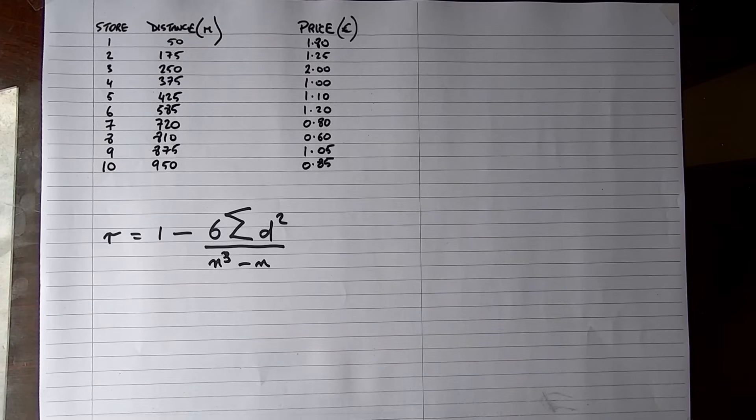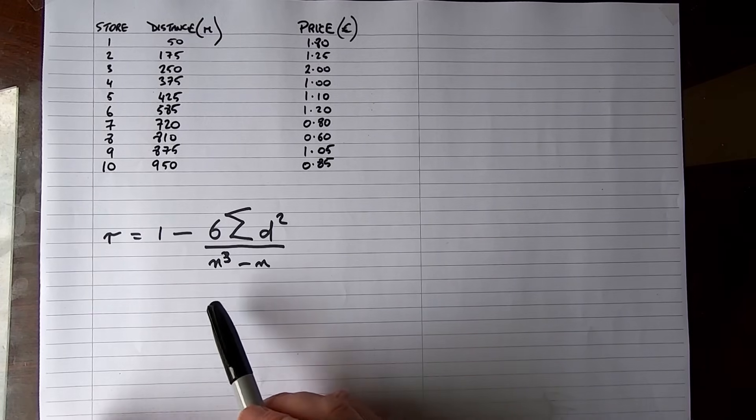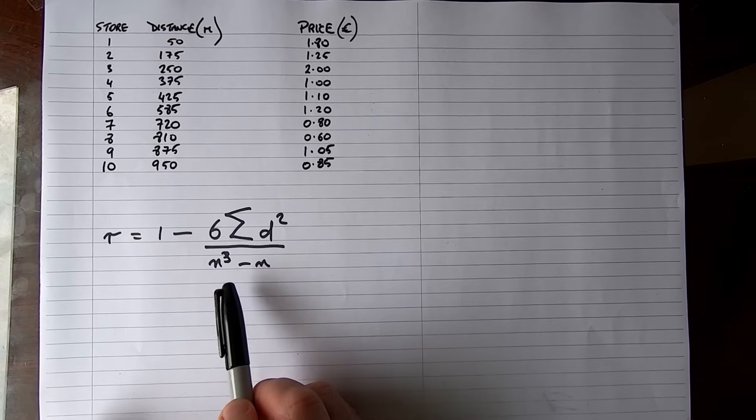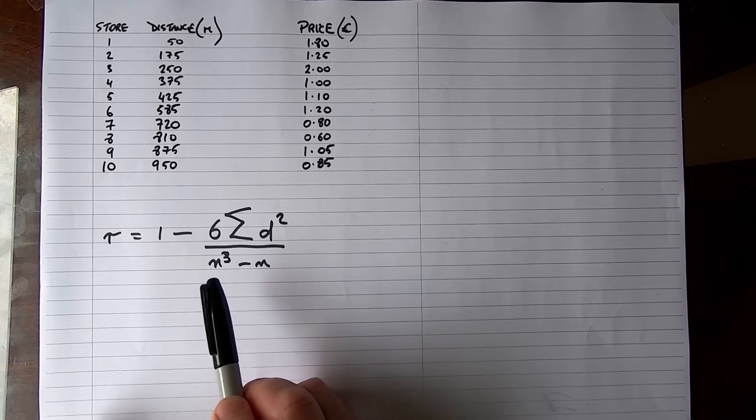Okay, so that's the visuals. Our formula that we're going to need to calculate Spearman's rank correlation coefficient R is the following. It looks a little bit of a mouthful, but it's not that bad when you get into it.